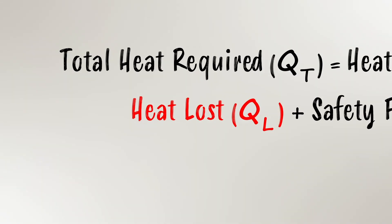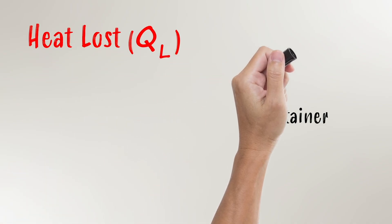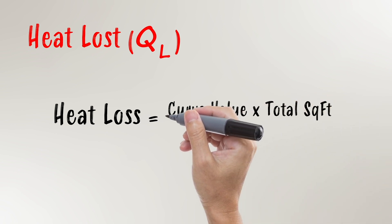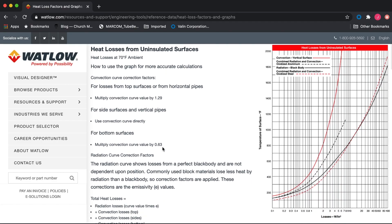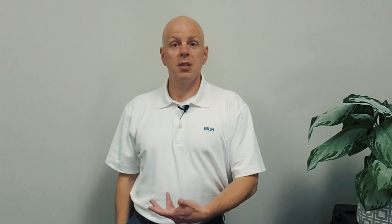Heat loss can have a significant impact when determining the kilowatts required. To find the heat loss, you need the area of the heated container, the materials of construction of that container, and the difference to the ambient. Heat loss curves allow you to determine the loss in watts per square foot per hour. After you know that value, plug in your values into the following equation: Q sub L, or heat loss, equals the curve value times the total square footage divided by 3412. This gives you the total kilowatts lost per hour due to heat loss. You can look up these curves online or plug the parameters into a computer program — the application engineering team at Valen runs these types of calculations all the time, so please contact us using the contact information in the video description.